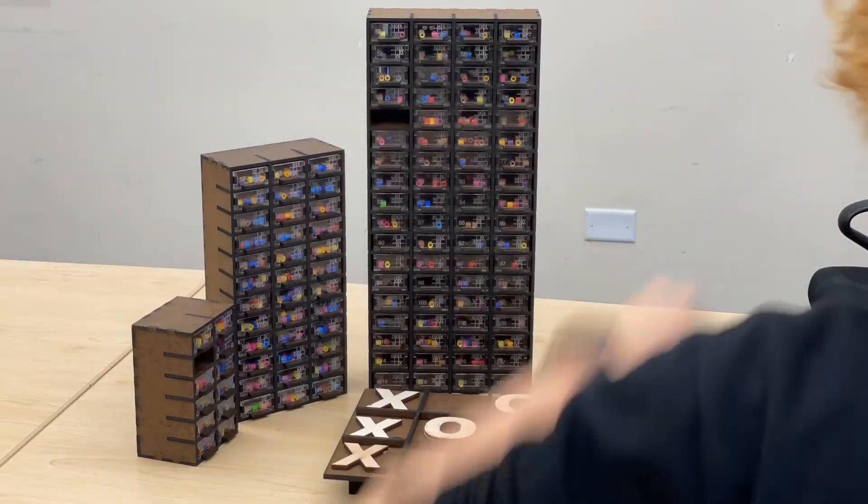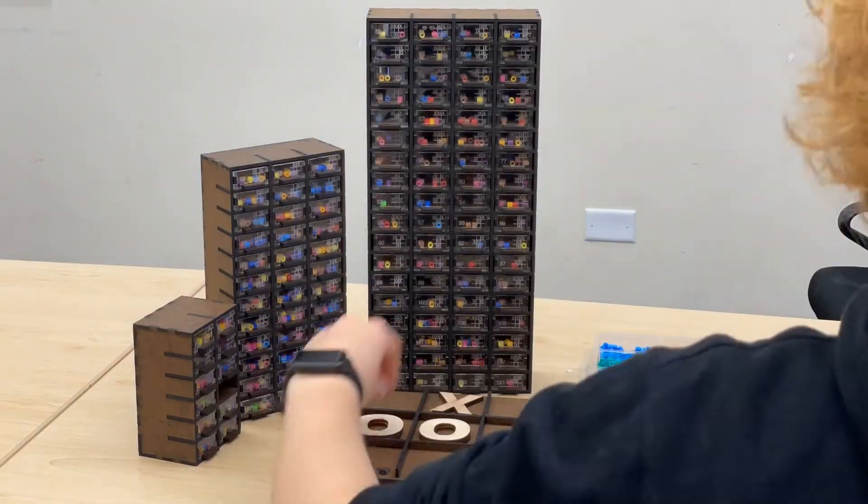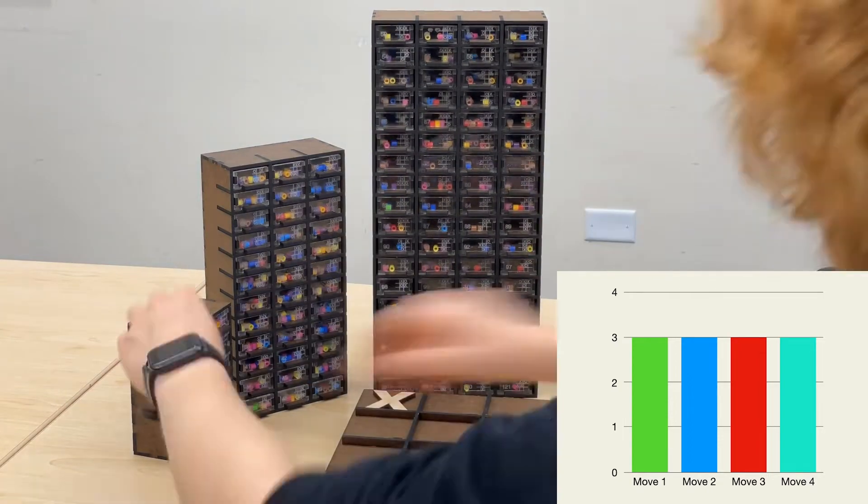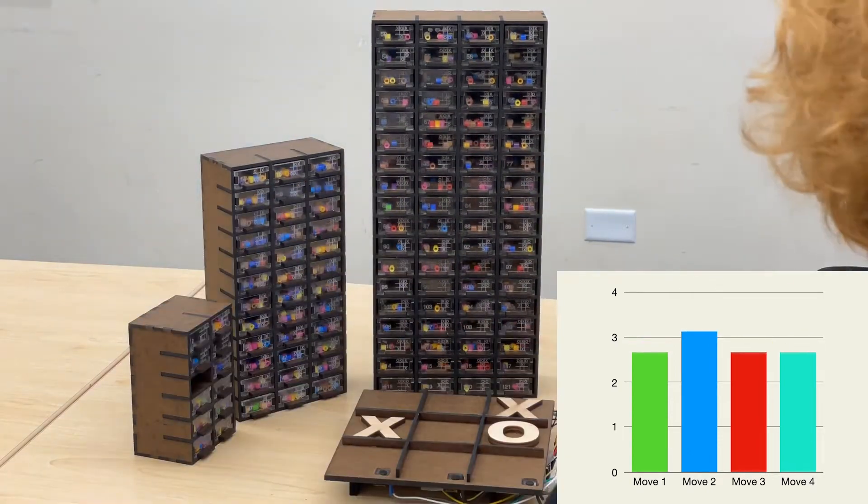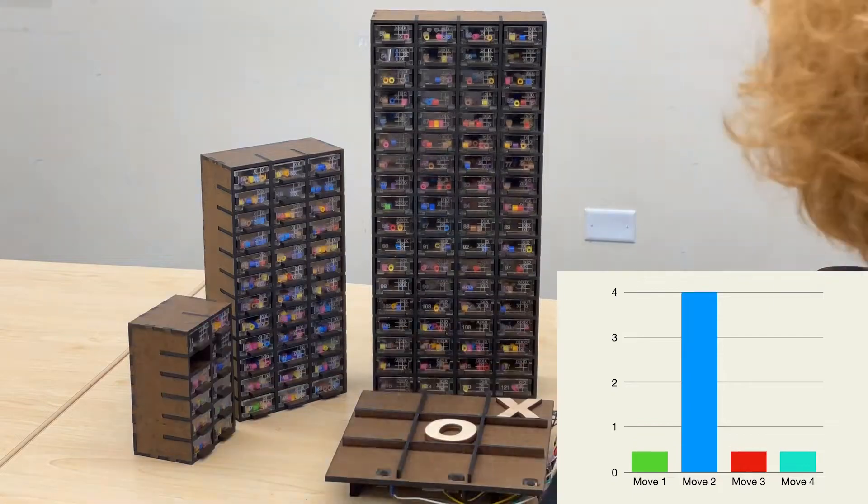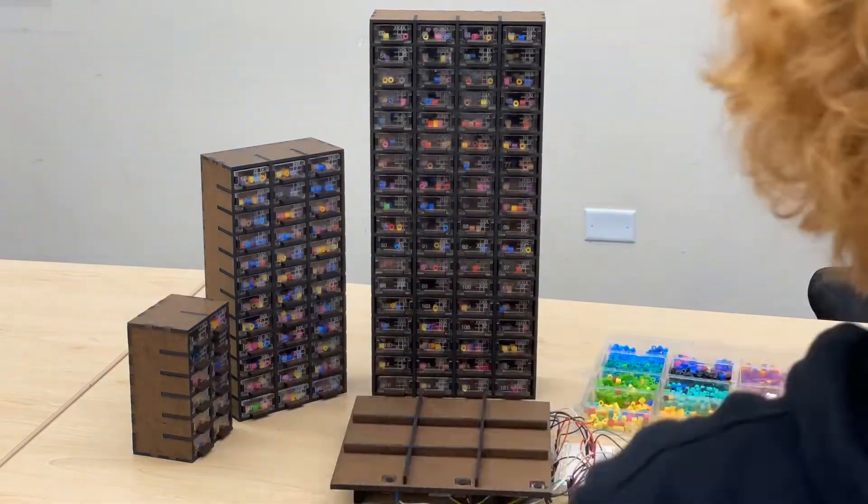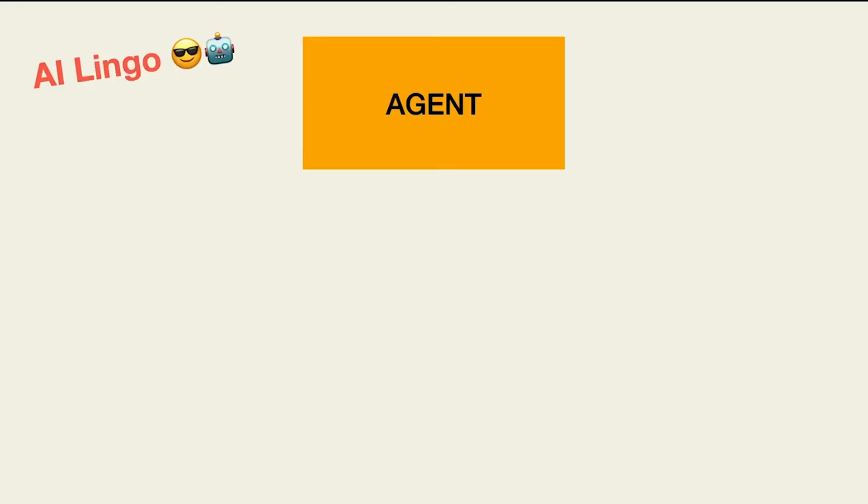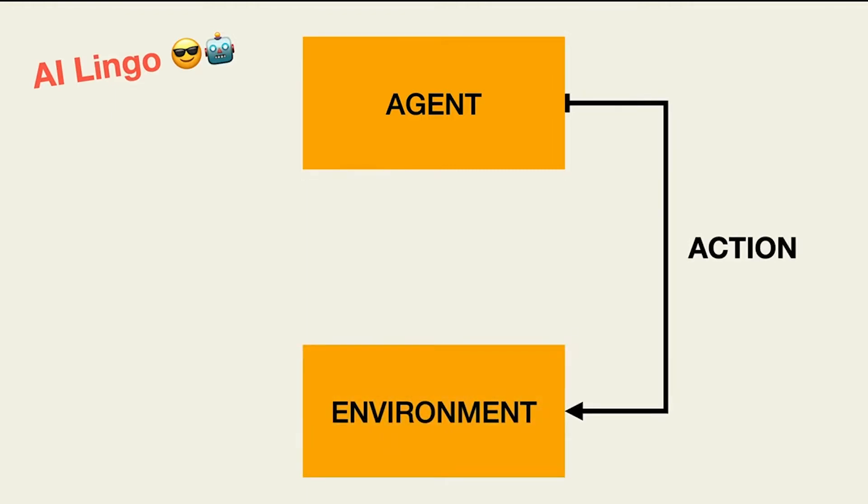In the beginning, the mechanical computer plays randomly, as each move has an equal chance of being drawn. However, it improves over time as the bead concentrations change to only include the best beads in each scenario. In AI lingo, we call the mechanical computer an agent that interacts through actions with the environment, which in turn gives the agent positive or negative rewards to influence its future actions.